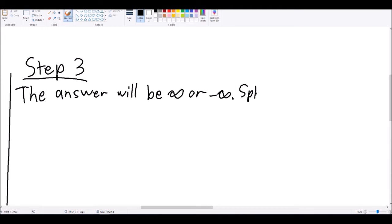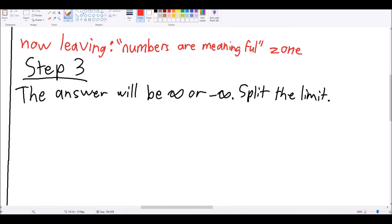As for which one, you're gonna need to split the limit into an approaches from below and approaches from above. Buckle your seatbelts, because at this point, the numbers don't matter.